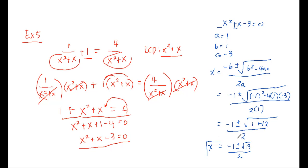So we now have negative 1 plus and minus square root of 13 over 2. That's the value for our x. So again, the values of our x could be negative 1 plus square root of 13 over 2, or it can be negative 1 minus square root of 13 over 2.